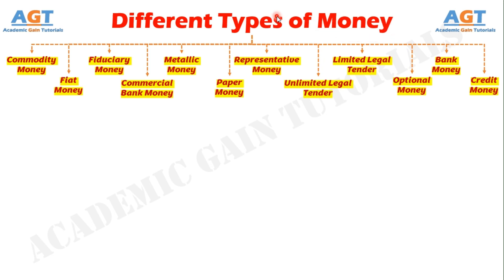The various types of money are: Commodity Money, Fiat Money, Fiduciary Money, Commercial Bank Money, Metallic Money, Paper Money, and Reserve Money.